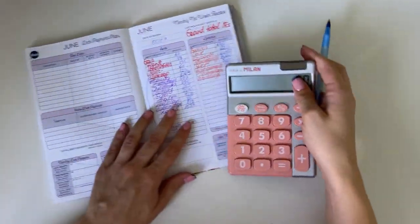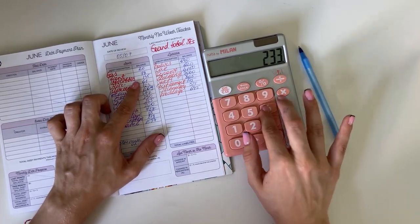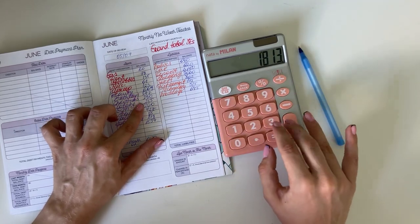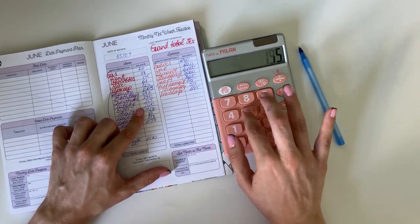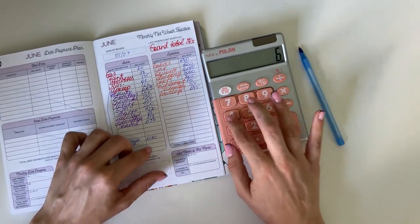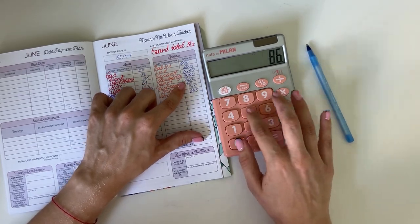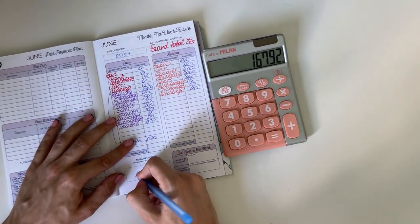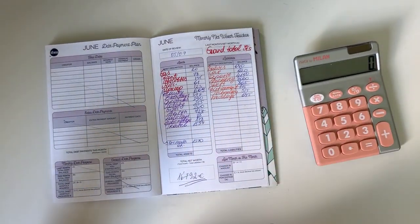Now let's calculate the big grand total. A little ASMR typing for you. So we have 1,554 plus 1,370 plus 640 plus 620 plus 4,150 plus 3,000 plus 865 plus 175 plus 515 plus 645. So we have in total 16,792 euros at the end of June.